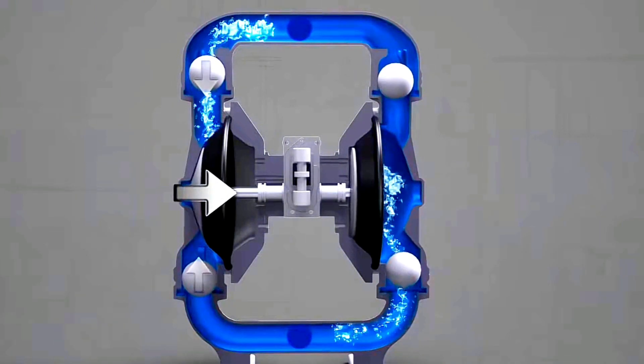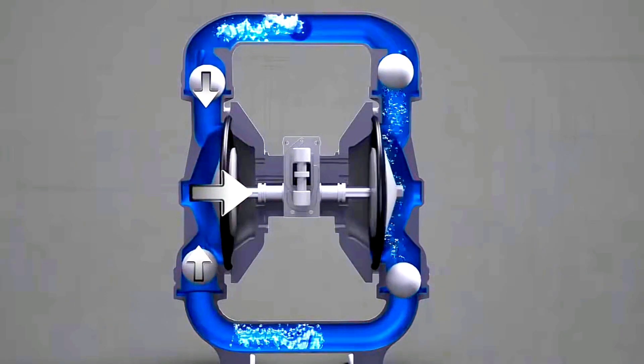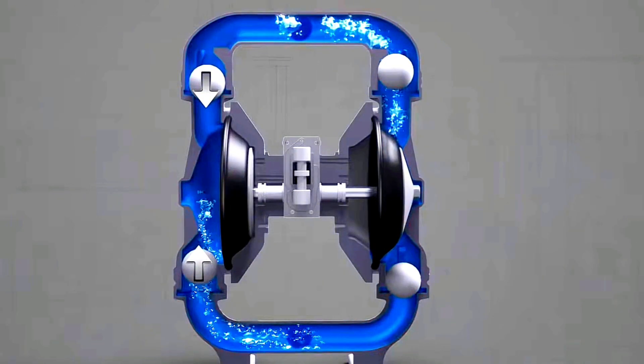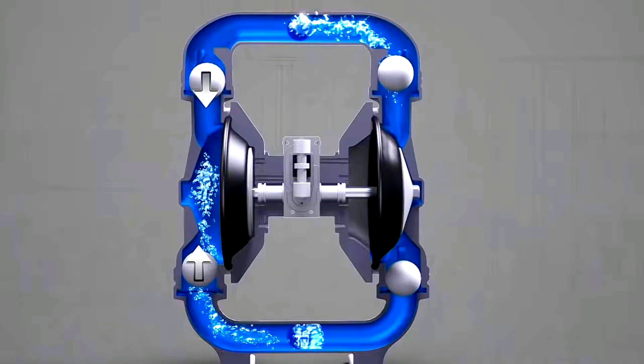As a diaphragm moves inward, it creates suction. This suction motion causes the balls to move towards each other. As this happens, the top valve closes and the bottom valve opens. This allows liquid to enter the chamber through the bottom port.